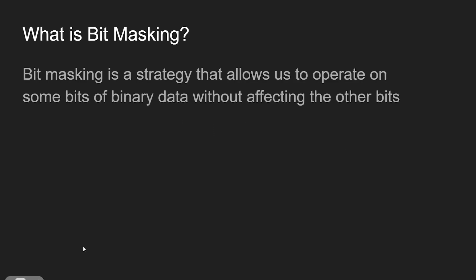So to start, let's just get a basic definition of what bit masking is. Bit masking is a strategy that allows us to operate on some bits of binary data without affecting other bits. This can be really useful in programming if we want to change some bits of data, but either we don't know what the other ones do, or we want to leave them alone, or we don't want to worry about setting all of the bits of some register or some other data.